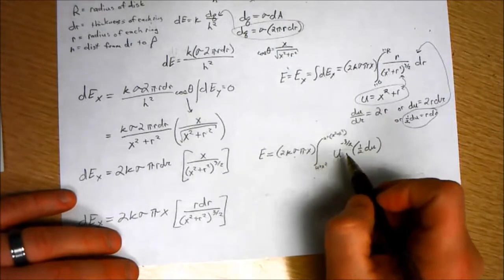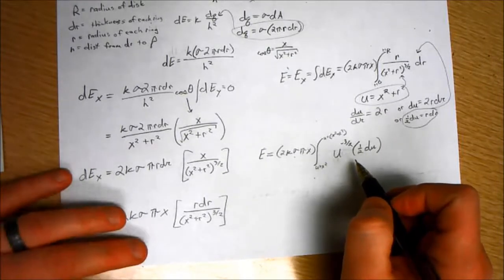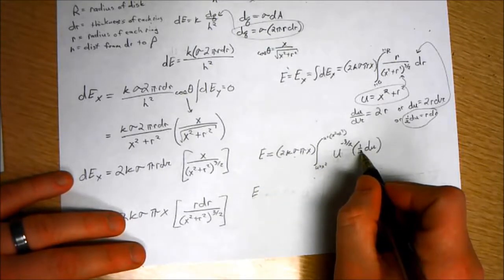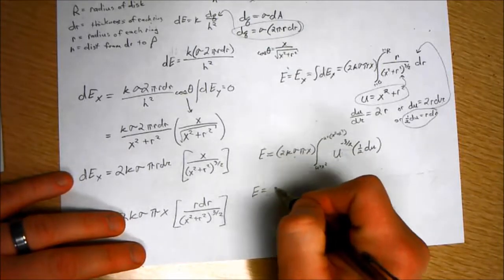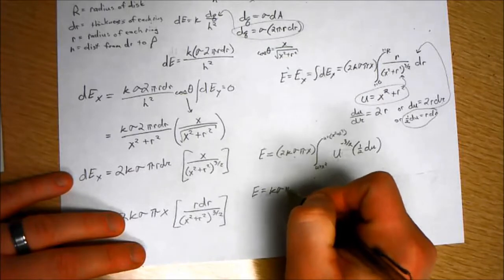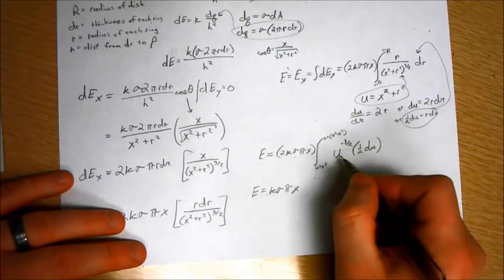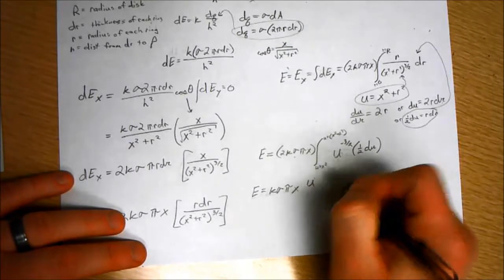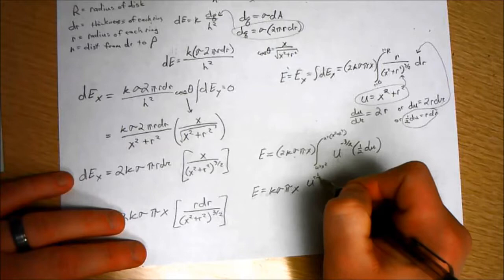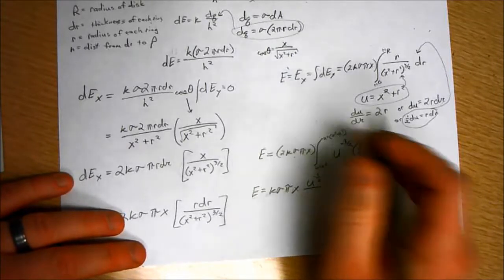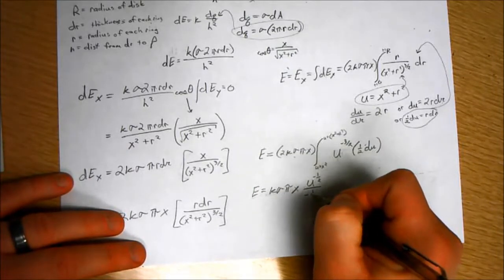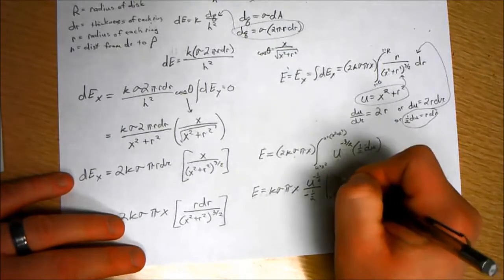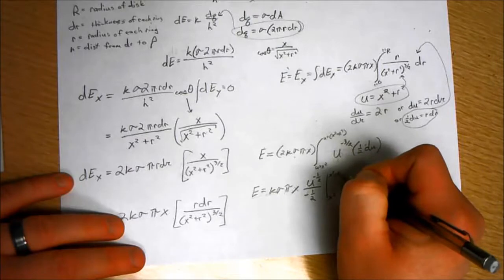So, we have now a simple, we're integrating a relatively simple polynomial. First thing I'm going to do is notice that the 1 half cancels out the 2 over here. So, K sigma pi X. Now, the integral of U to the negative 3 halves - remember, that's going to be, we're going to add 1 to the exponent. So, that's U to the negative 1 half. And, then we have to divide by whatever the leftover exponent is. And, that's evaluated from X squared to X squared plus R squared.